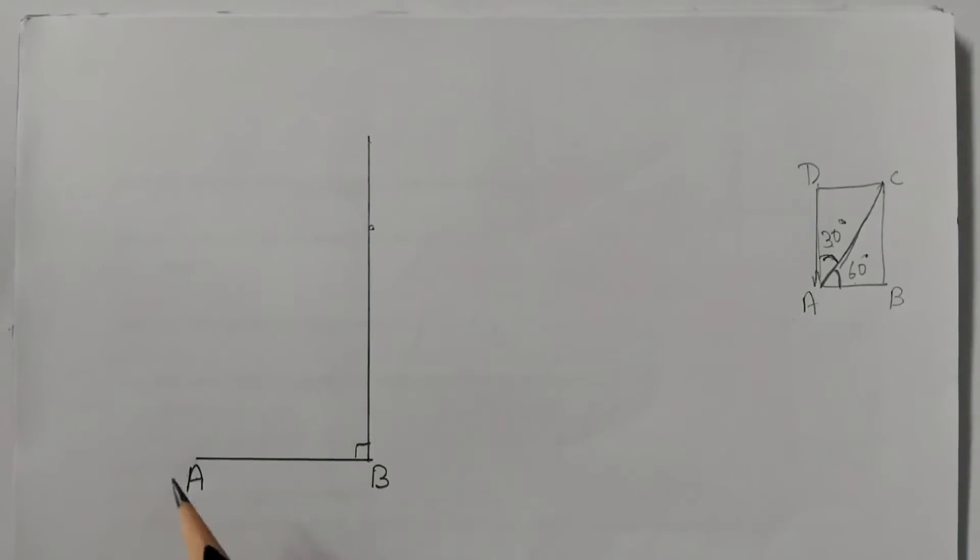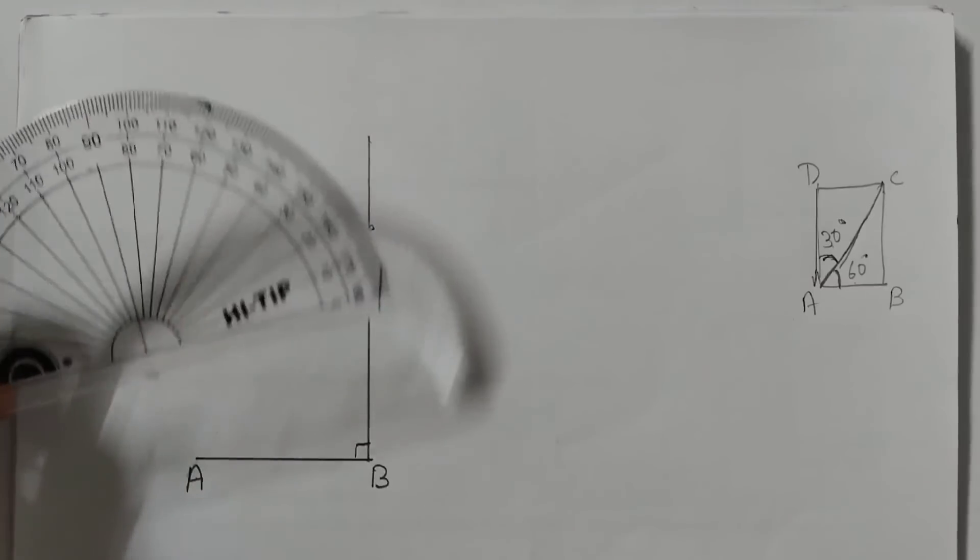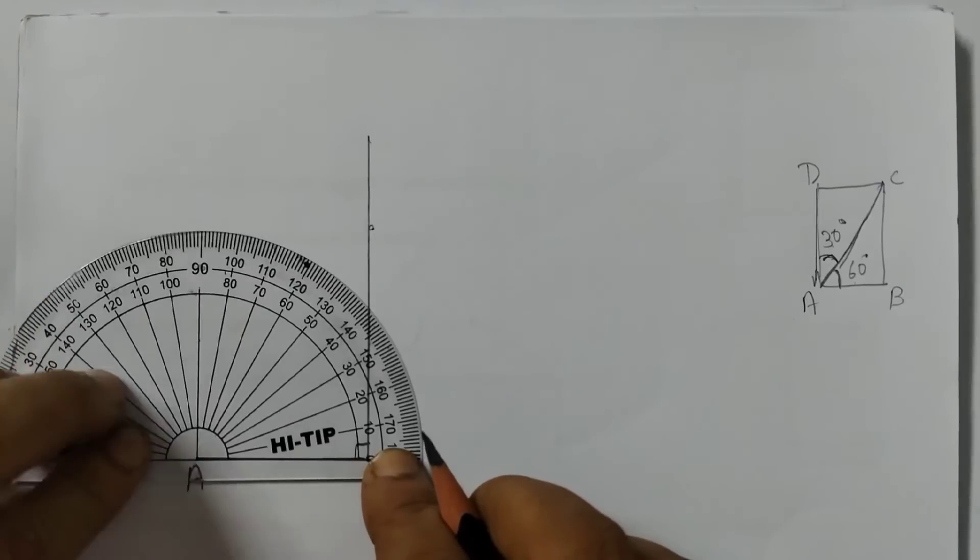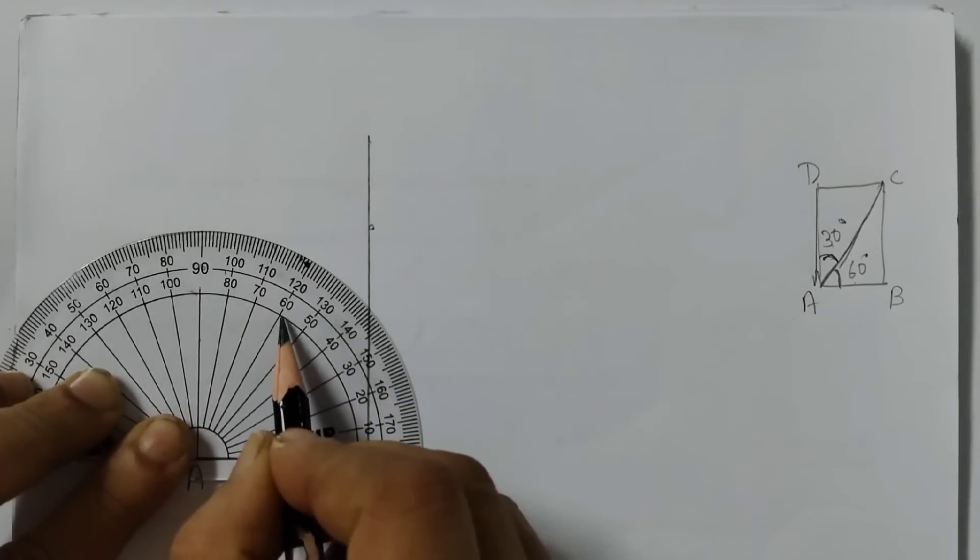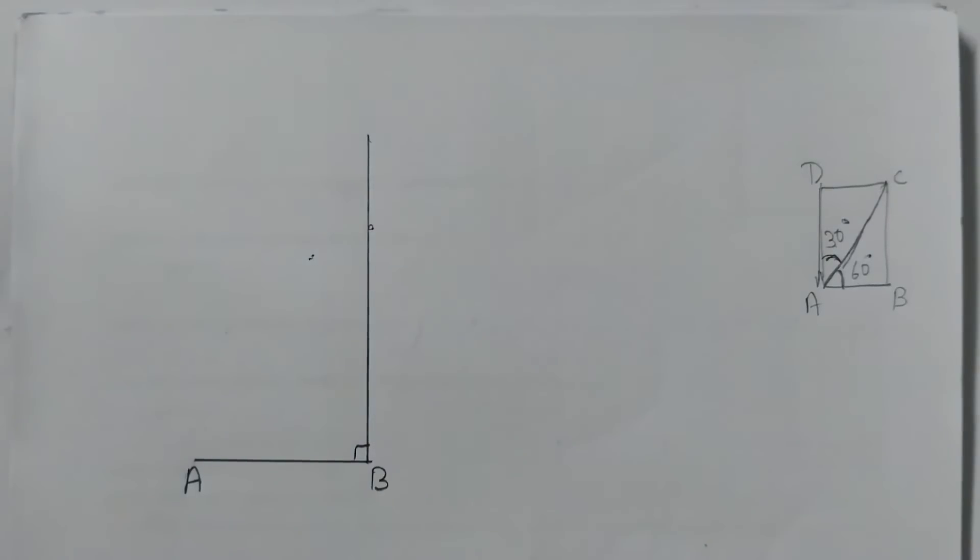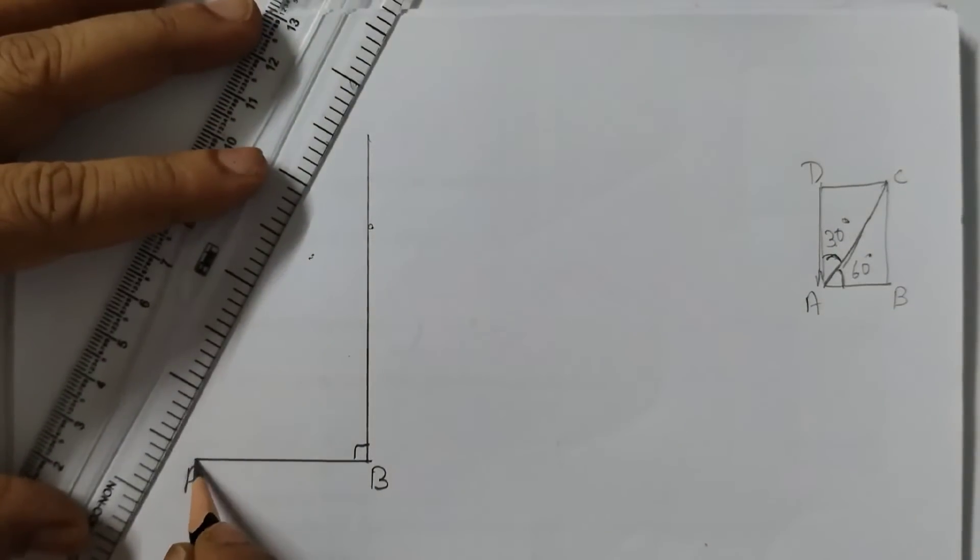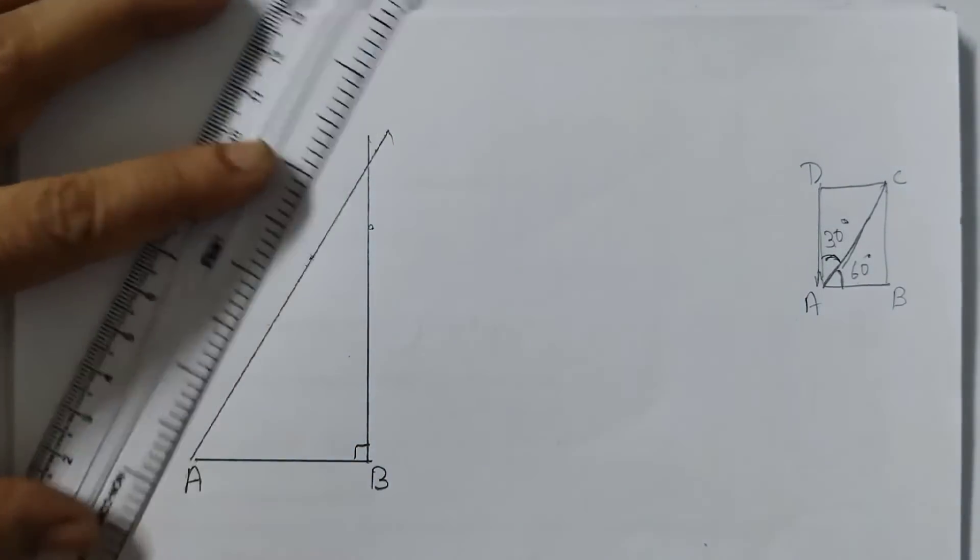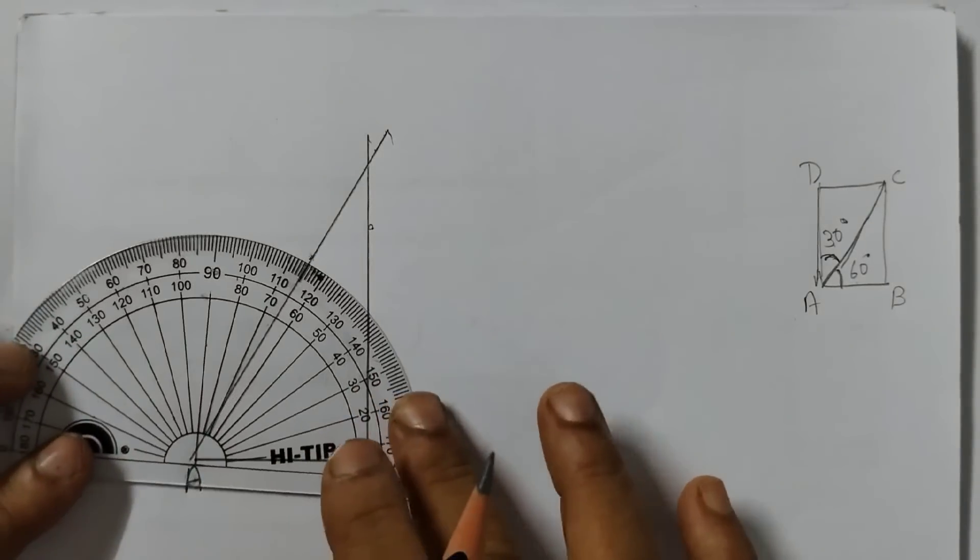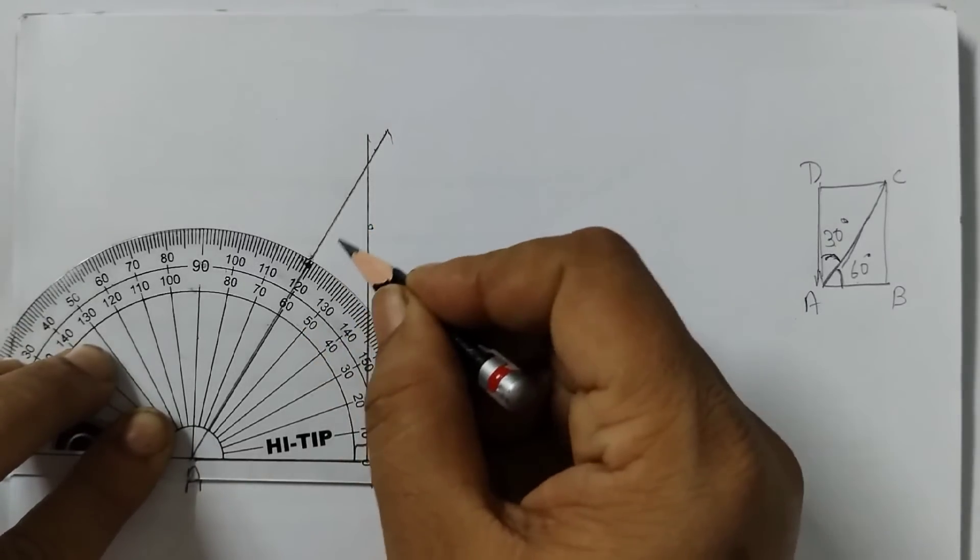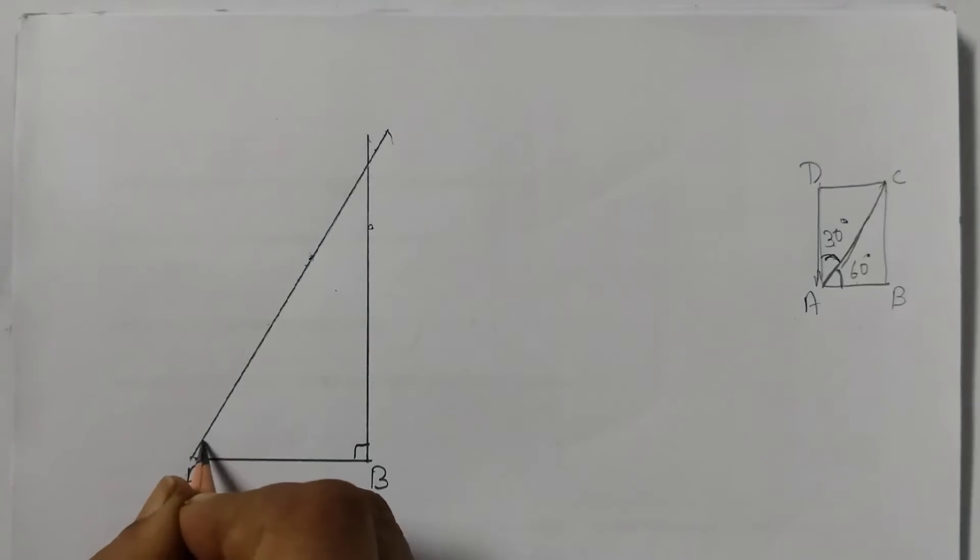Step number 2 is we have to draw an angle of 60 degrees here. So we will use a protractor here. Place it like this at point A. And mark a point. You can see here 60 degrees. This is 60. So we will mark a point here. And use a ruler to join this point and this point. So this angle is 60 degrees. Let's check. Yes, you can see the line is coming out of this. So this is 60 degrees. Label it as 60 degrees.